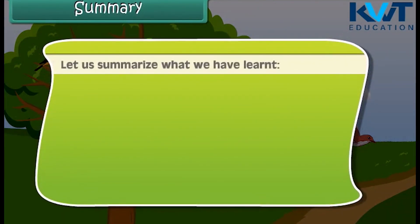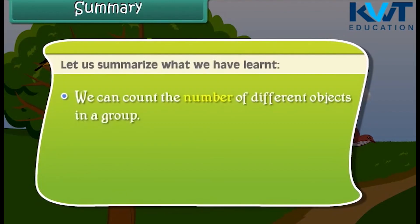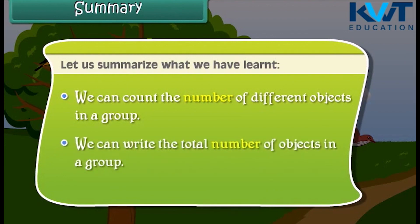Summary: Let us summarize what we have learned. We can count the number of different objects in a group, and we can write the total number of objects in a group.